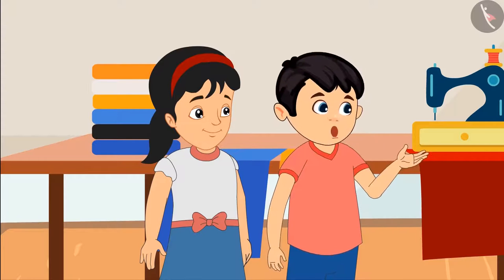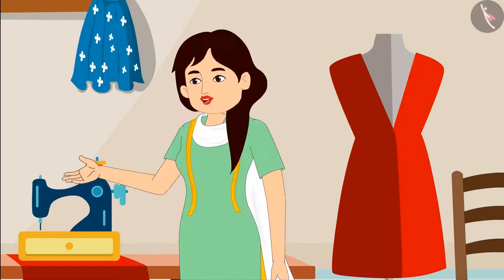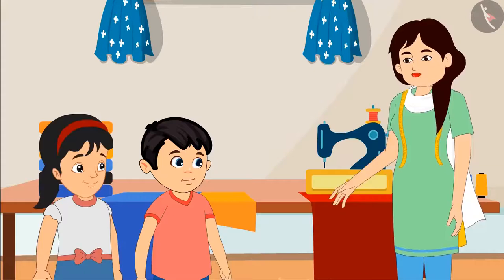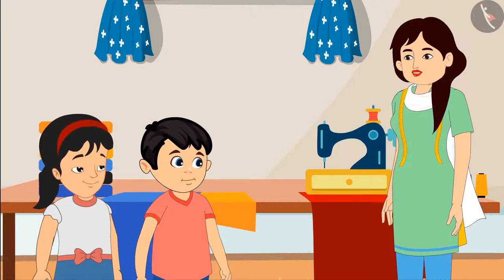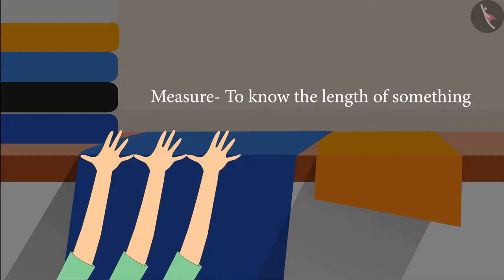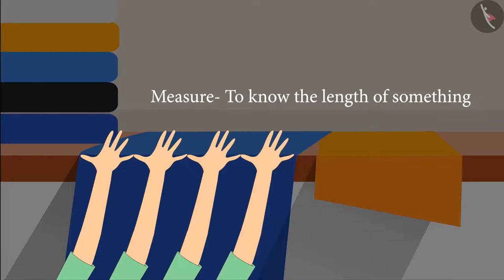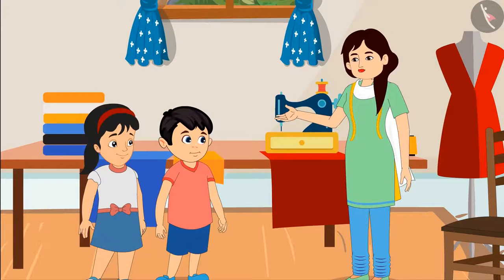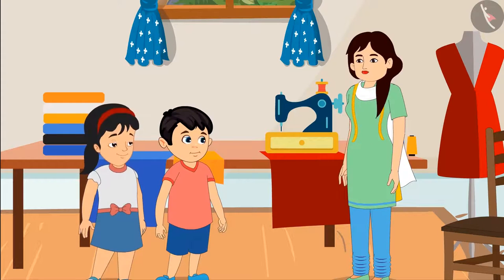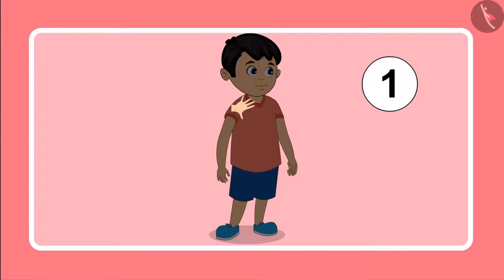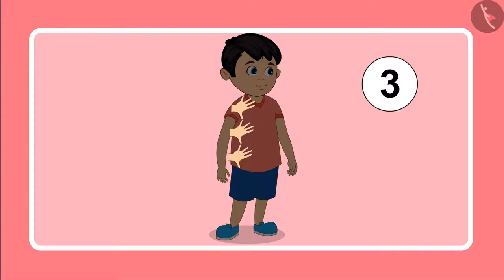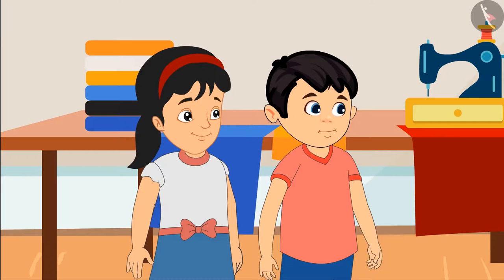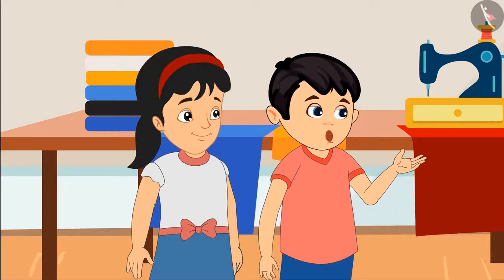Aunty, what are you doing with your hand? My dear, I am taking the measurements. Aunty, what is a measurement? Children, we measure to know the length of something. Aunty, how do we measure? Look Chotu, I took the measurement of the length of your shirt with my hand like this — one, two and three. Your shirt is three handspans long. Ok Aunty, this is how things are measured.